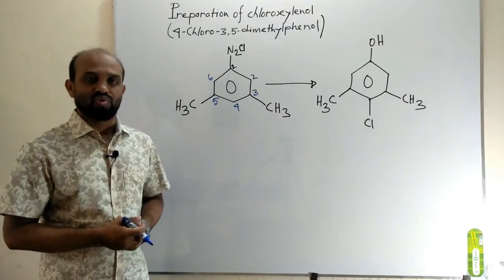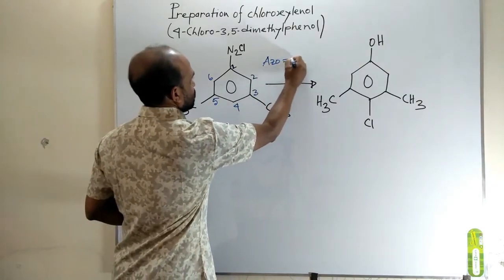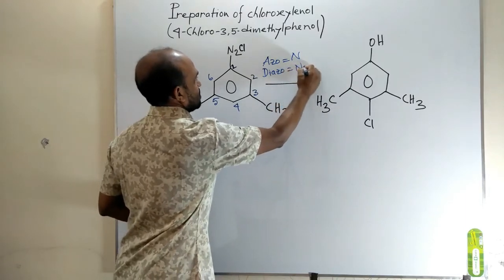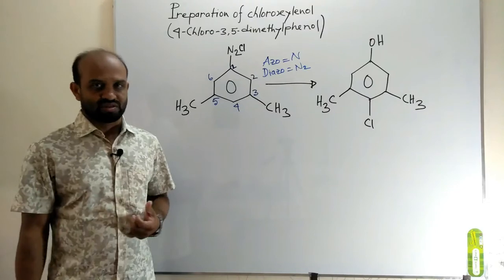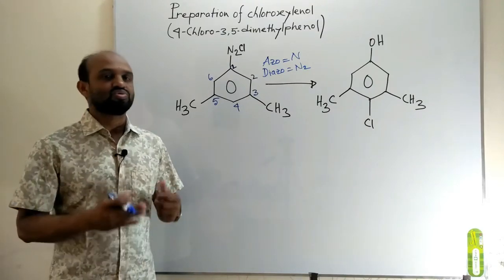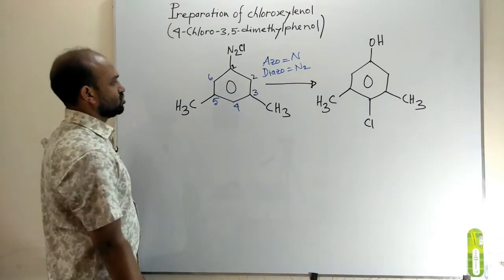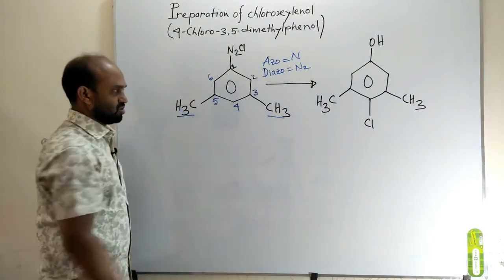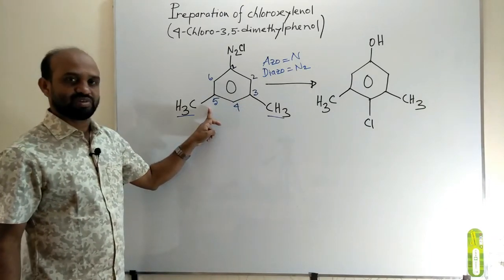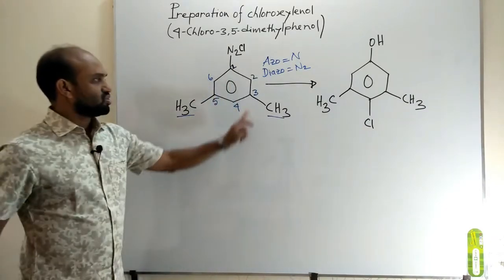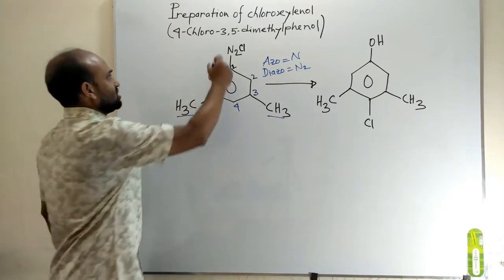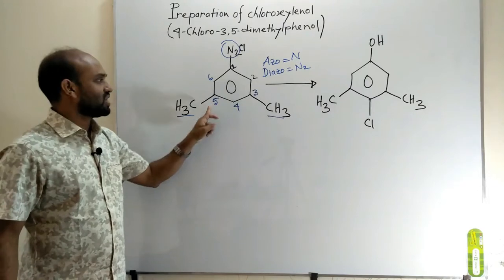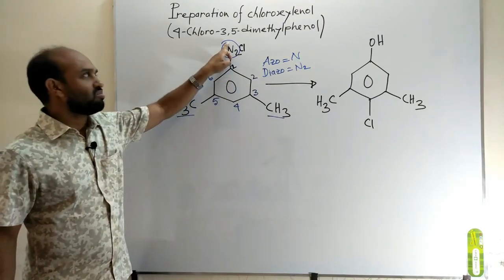Another thing we have to know: azo means nitrogen and diazo means 2 nitrogen atoms. Di means 2, azo means nitrogen. So diazo means 2 nitrogen atoms. Here, we see at carbon 3 one methyl group and at carbon 5 another methyl group. So we can tell 3,5-dimethyl and there is a benzene ring, so 3,5-dimethylbenzene. Diazo, then chlorine.